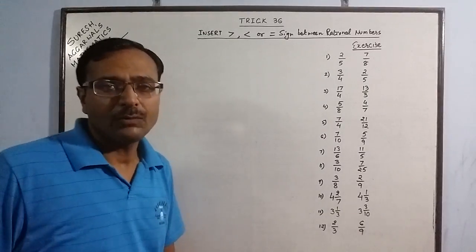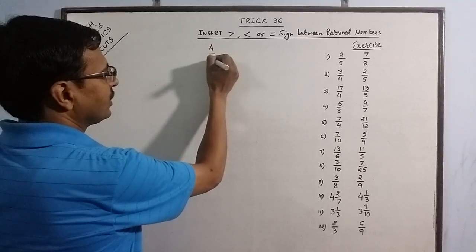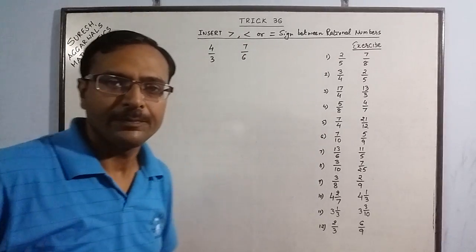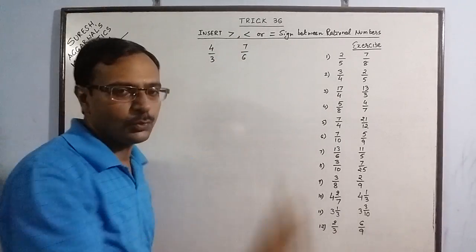Now I am taking one example for demonstrating this concept. Say we have 4 by 3 and 7 by 6. We have to find out which of these two rational numbers is greater or put one of these signs: greater than, less than or equal to.